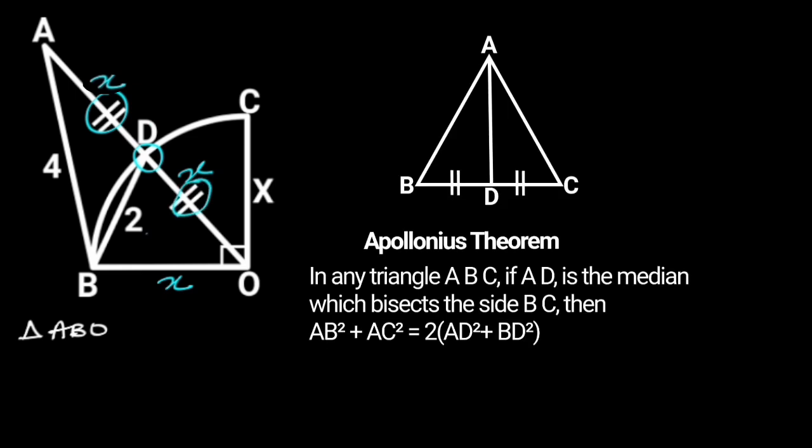Let's recall the Apollonius theorem. It states that in any triangle ABC, if AD is the median which bisects the side BC, then AB squared plus AC squared is equal to 2 times AD squared plus BD squared.